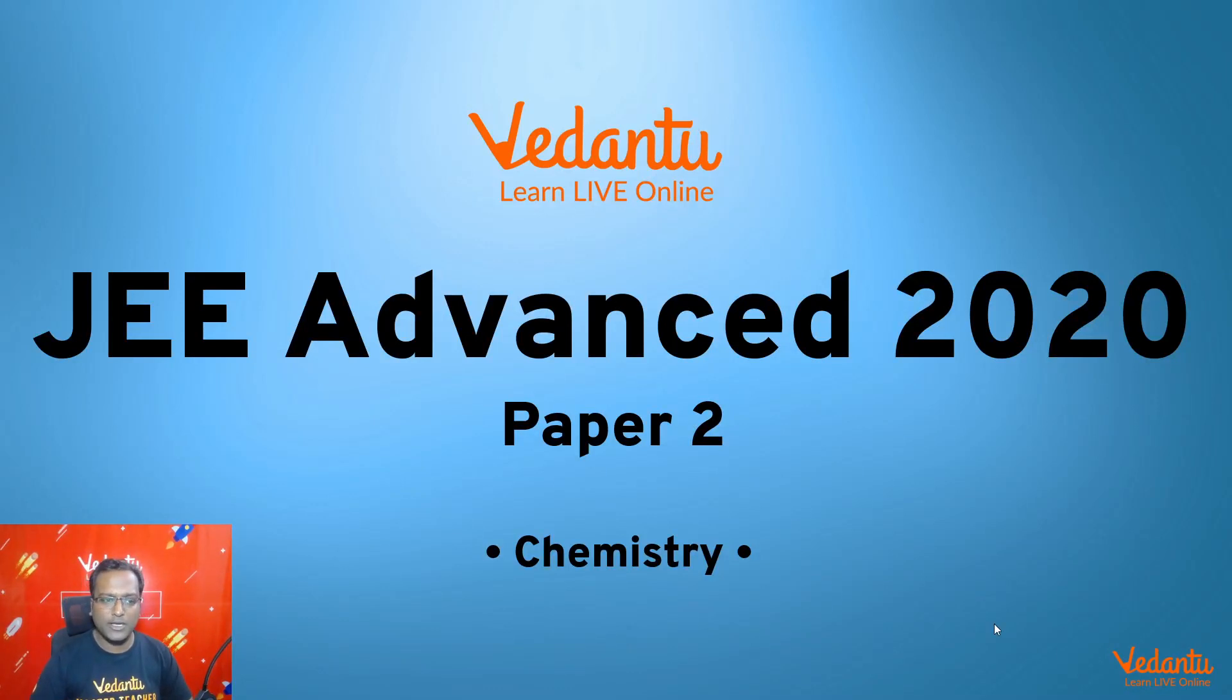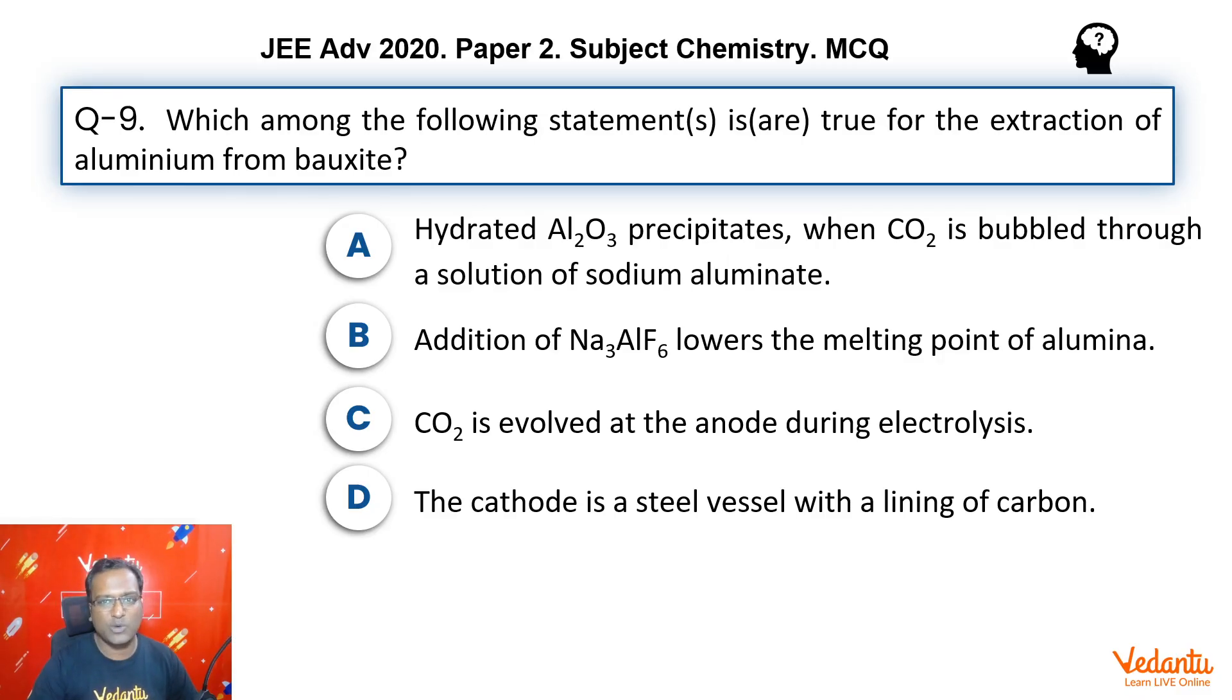Hi guys, my name is Shubhanga Garodia, chemistry master teacher at Vedantu. Today we are going to talk about JEE Advanced 2020 Paper 2 and discuss question number 9. This question is a multi-correct type question about aluminum extraction from bauxite, pretty standard stuff.